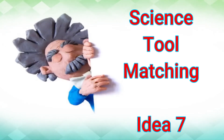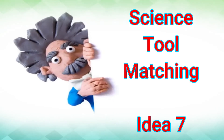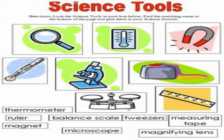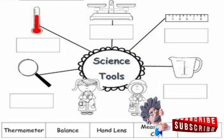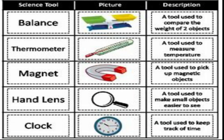Idea number seven is a science tool matching game. Here, students are challenged to match the name of the tool with its picture. In this activity, students will explore more scientific tools and learn their names and uses.